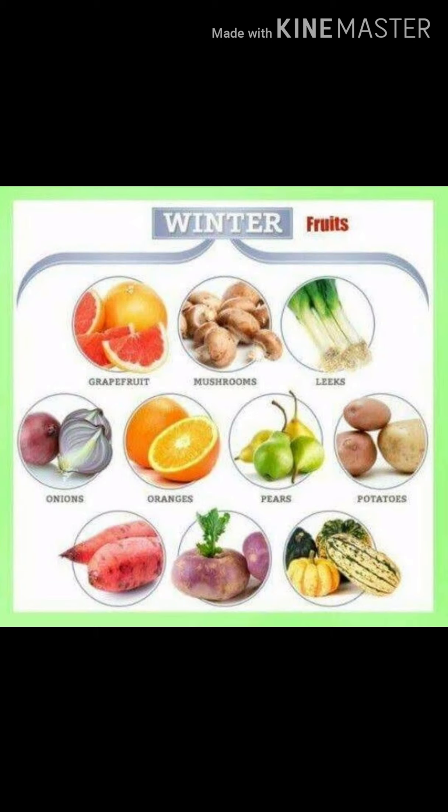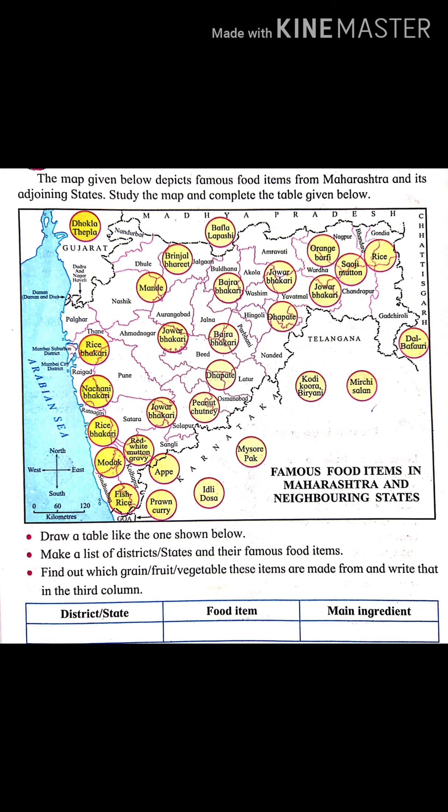Fruits available in winter are grapefruit, mushrooms, leeks, onions, oranges, pears, and potatoes. The map given below depicts famous food items from Maharashtra and its adjoining states.